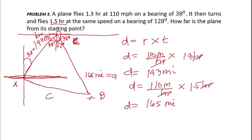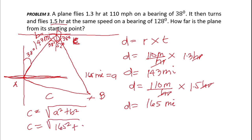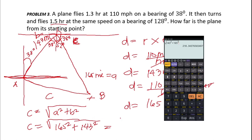C equals the square root of A squared plus B squared: C equals the square root of 165 squared plus 143 squared. Calculating that, and rounding to two significant figures because the given data has two significant figures, the result is approximately 220 miles.